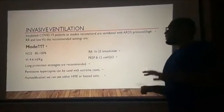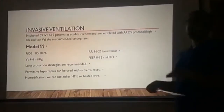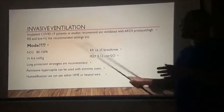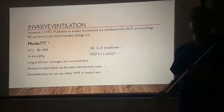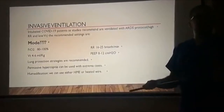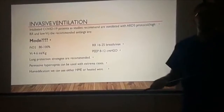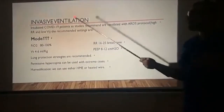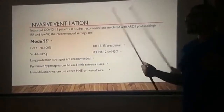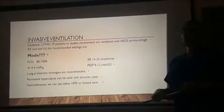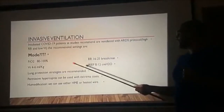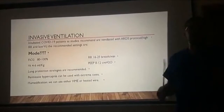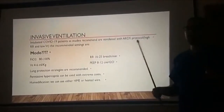For invasive ventilation, intubated COVID-19 patients are ventilated with ARDS protocol, meaning high respiratory rate and low tidal volume. The most beneficial mode is APRV (airway pressure release ventilation); if APRV is unavailable, pressure control or PRVC can be used. Recommended settings: FiO2 initially 80 to 100%, respiratory rate 16 to 25, tidal volume 4 to 6 ml per kg, and PEEP 8 to 12 cmH2O. Lung-protective strategies should be used, and permissive hypercapnia can be applied since these are ARDS patients. For humidification, HME or heated wire circuits can be used.